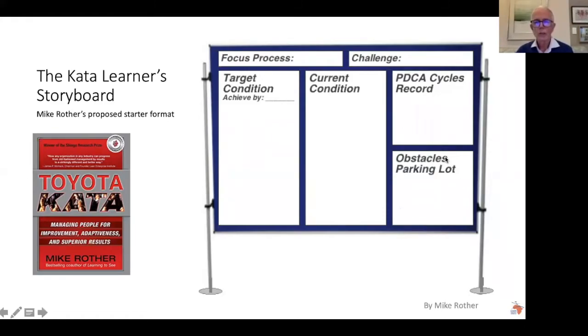And as they come up, we just park them. Then the PDCA—plan, do, check, act—cycles record is really where we're identifying the experiments and we will conduct those in a plan, do, check, act cycle and have a running record. So essentially we pick an obstacle, transfer it to the experimentation board, devise an action, and away we go.